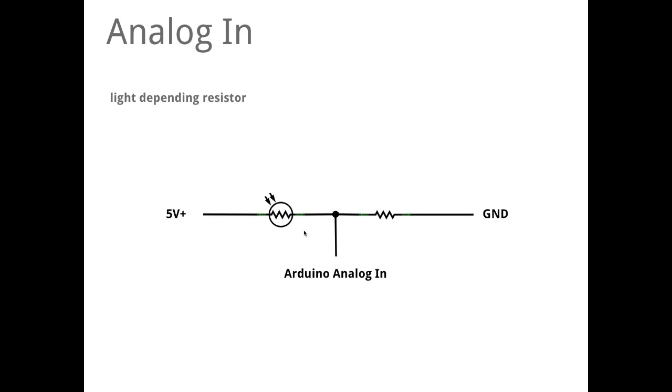If you remember the potentiometer, there it was like a relation of two resistors was sensed, and this is what we have to do here again. We have one resistor - this is our light resistor - and we need a second resistor which is called the reference resistor.